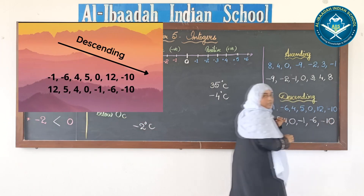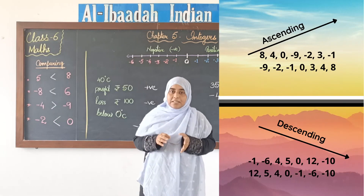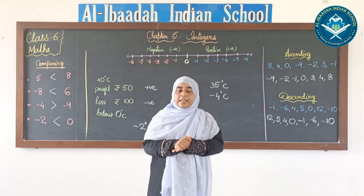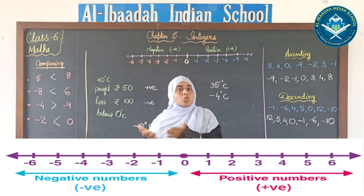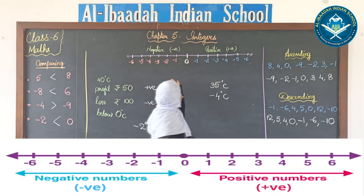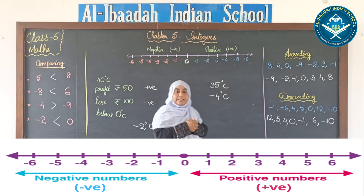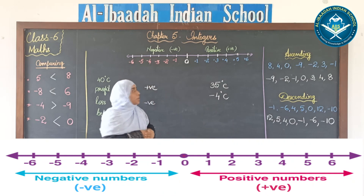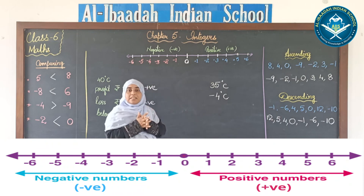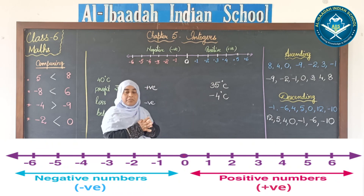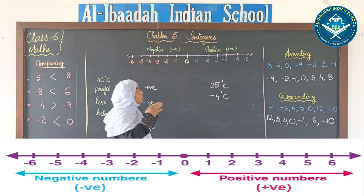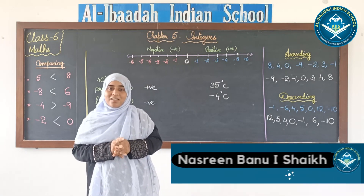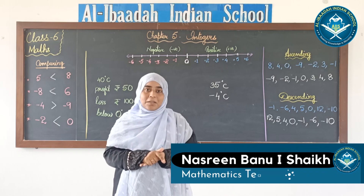I hope we have understood what integers are and the two different types — positive and negative. As we move towards the right, the value of integers increases; as we move towards the left, the value decreases. Zero is always in the center. There is no end for positive or negative integers. Keep practicing, children, and inshallah I'll come back with new concepts very soon.